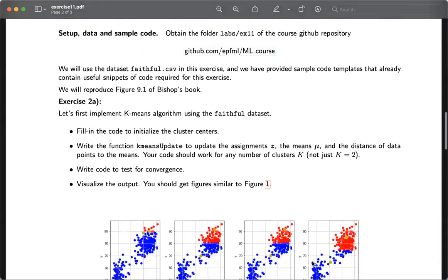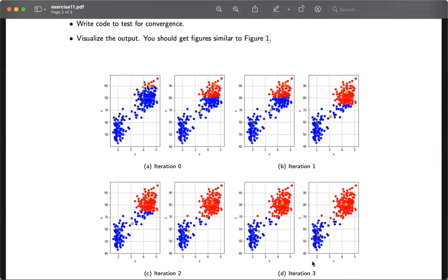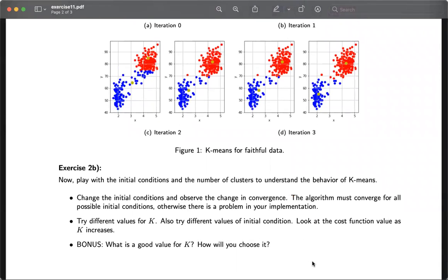In the implementation part of this exercise, you first have to implement K-means algorithm and then apply it to the two-dimensional faceful data and three-dimensional RGB values of an image. So first, you initialize your cluster center either from your data by subsampling some points of data or just some random point in the scale of data.